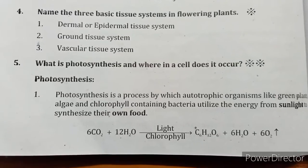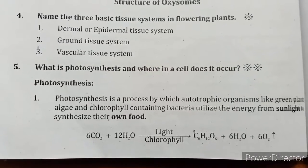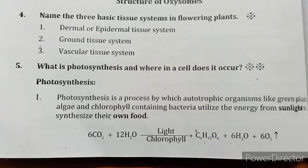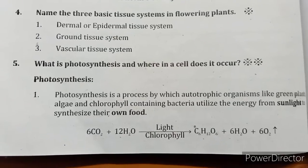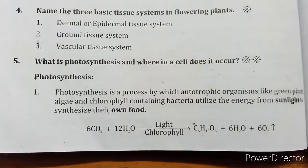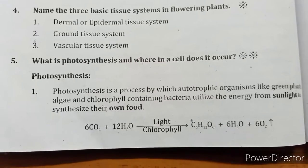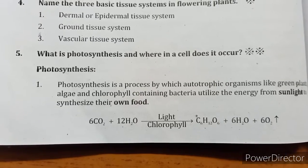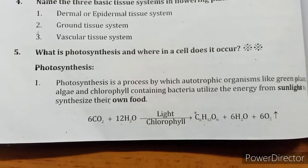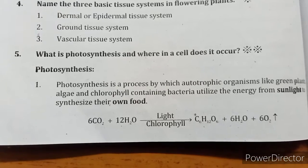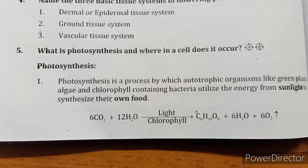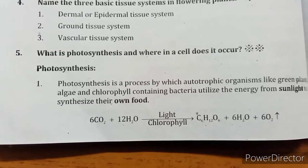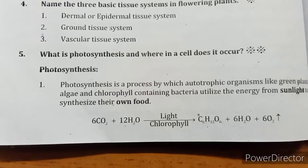What is photosynthesis and where in the cell does it occur? Photosynthesis is a process by which autotrophic organisms like green plants, algae, and chlorophyll-containing bacteria utilize the energy from sunlight to synthesize their own food. The equation is: 6CO2 + 12H2O → (light, chlorophyll) → C6H12O6 + 6H2O + 6O2.